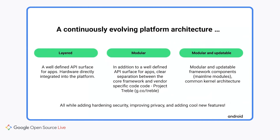Android is continuously evolving its platform architecture through three key ideas. First, it's layered — we want a well-defined API surface for apps with backward compatibility via Jetpack. Second, it's modular — we have a clear separation between the framework and vendor-specific code, called Project Treble, with more information at g.co/treble. Finally, it's modular and updatable through Mainline Modules: modularized, updatable framework components that enable a faster release cadence outside the main Android OS releases, using a common kernel architecture with a common application binary interface.